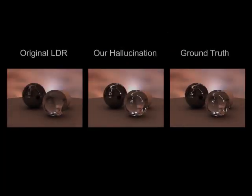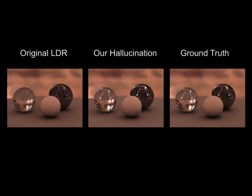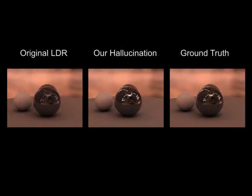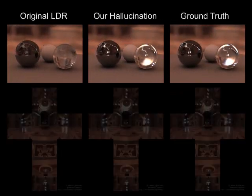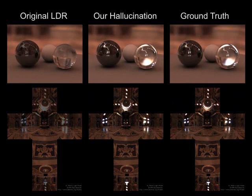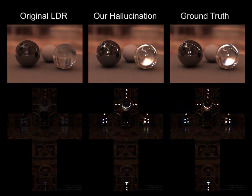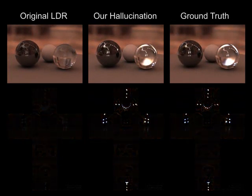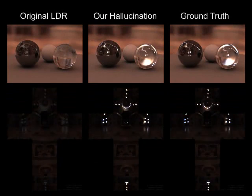We can also use our technique to hallucinate high dynamic range environment maps, and here is one example. Notice that our hallucinated result provides more faithful illumination than the low dynamic range environment map.